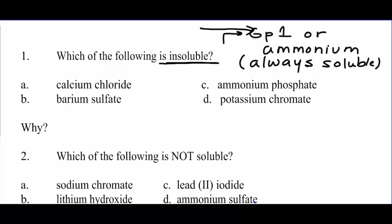Group 1 ions, if you don't know, are lithium, sodium, potassium, rubidium, cesium, and francium. But you won't find francium in a compound because it's radioactive. So you don't really have to worry about francium.